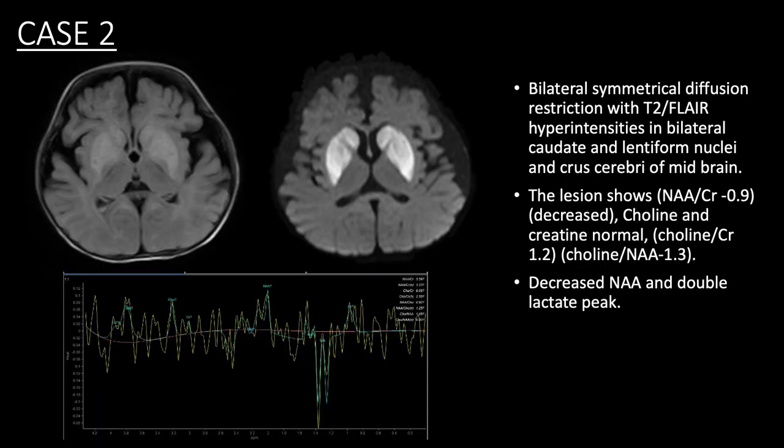Case 2 is of a 6-month-old patient in which MRI shows bilateral symmetrical T2 FLAIR hyperintensities in bilateral caudate lentiform nucleus, which also shows diffusion restriction. MRS shows reduced NAA and double lactate peak.